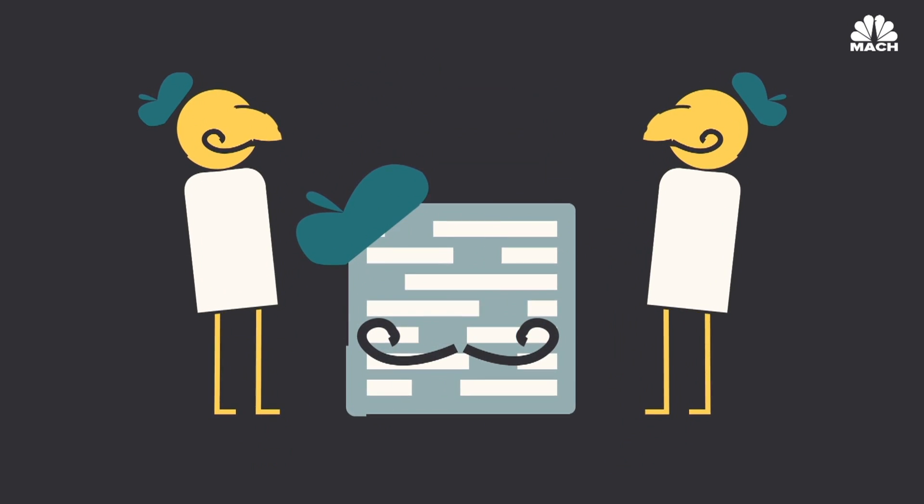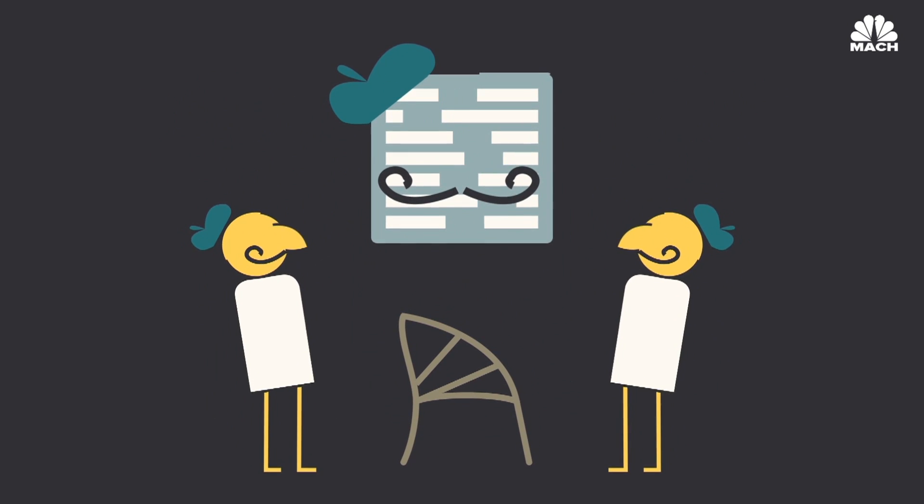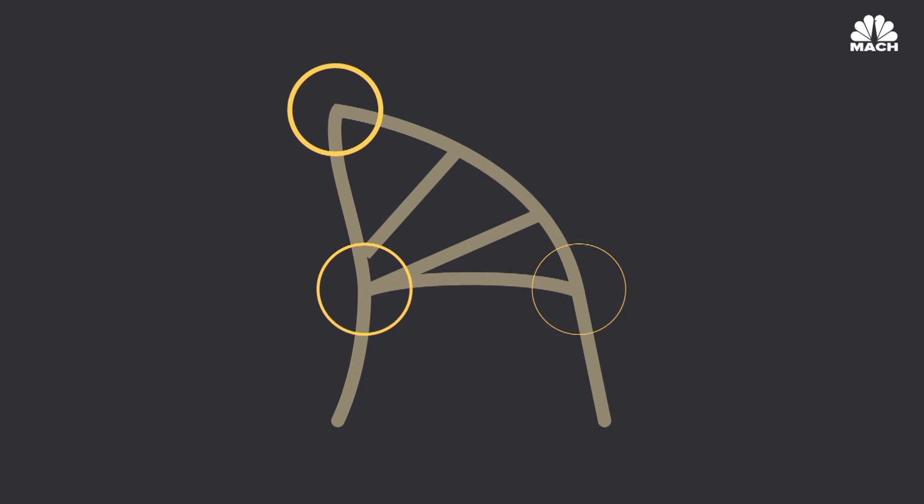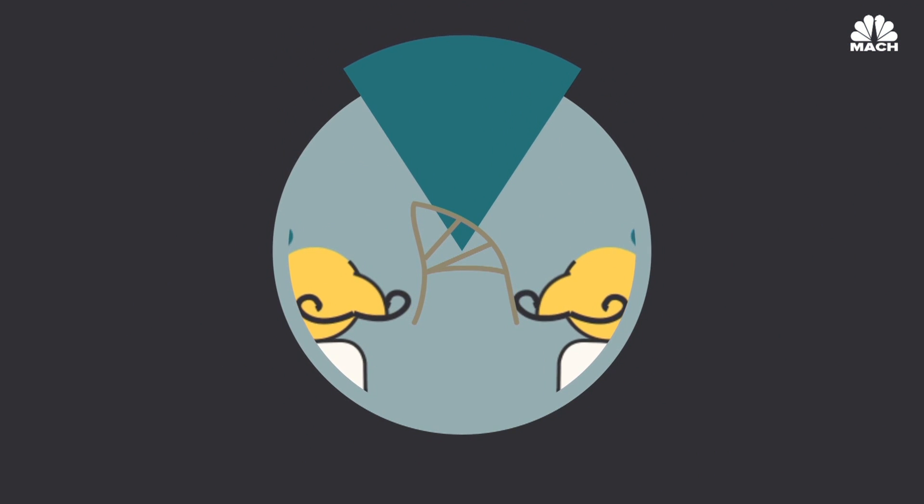the algorithm decided everything else. It offered up different geometric forms and continued refining the design to become more sleek. The creators ultimately decided on a chair that's skeletal-looking, suffers little stress to its joints, and uses 18% less material than the original human-created design.